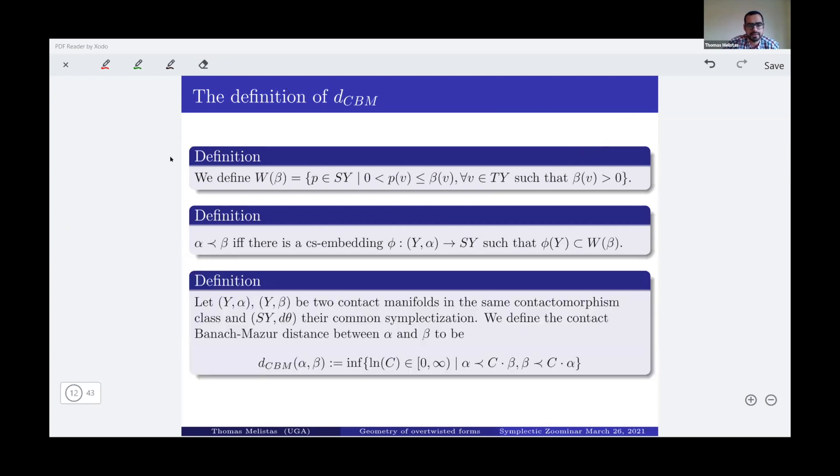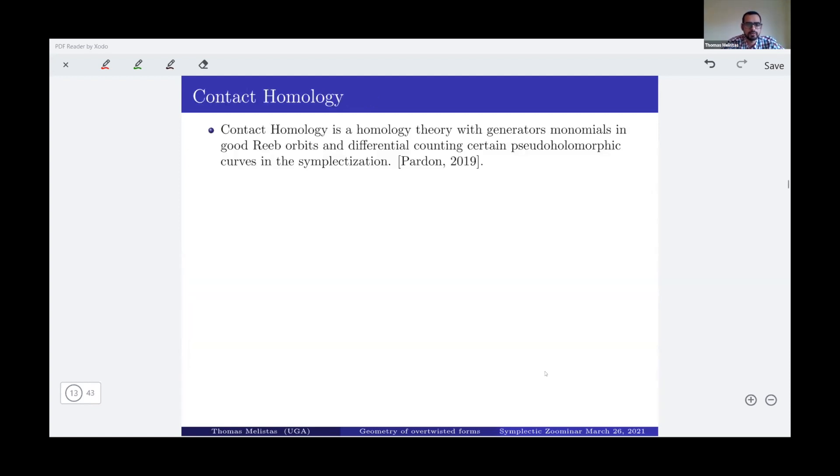And then we define the form alpha to be less than the form beta if I have a CS embedding which maps inside this W_beta. So basically, I need my embedding to be inside below the graph of beta in the symplectization. And then I can, since I have the ambient space which is the symplectization and the partial order, I can define the Banach measure distance to be the optimal way to interleave them. So I need to find CS embeddings which first map (Y, alpha) to W_{C beta} and map beta to W_{C alpha}. And that is my way of interleaving the forms alpha and beta.